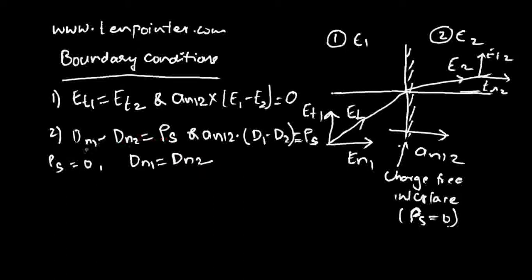Note that even though we write Dn1 minus Dn2 = ρs, strictly this form is not entirely correct, because Dn1 and Dn2 are vectors and the difference of two vectors cannot yield a scalar. In this expression, Dn1 and Dn2 represent only the magnitudes of electric flux density in region 1 and region 2, respectively.